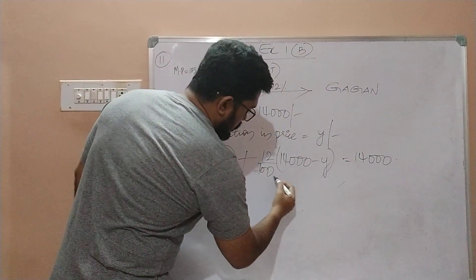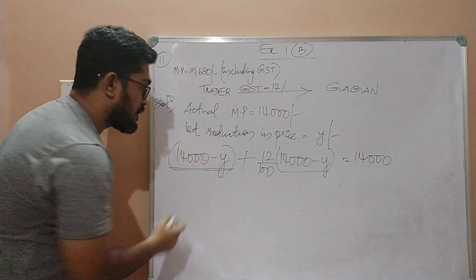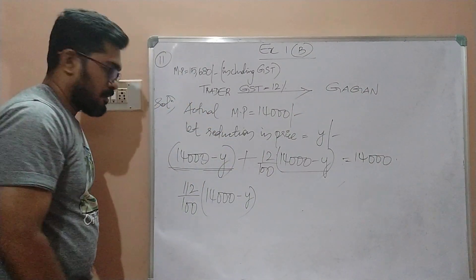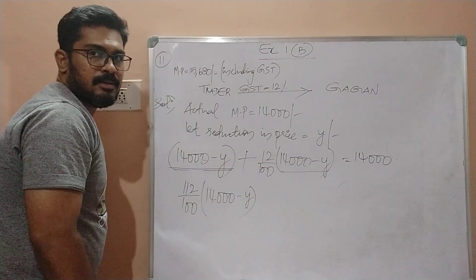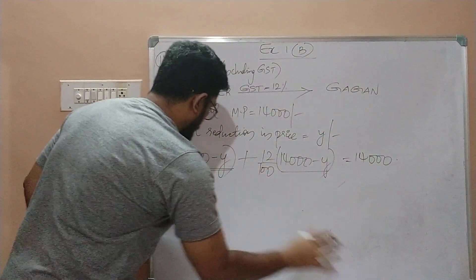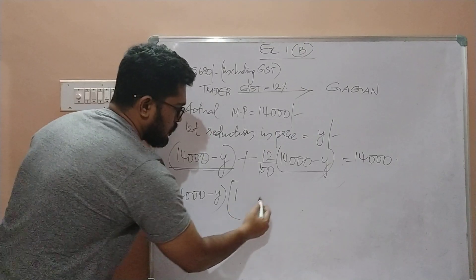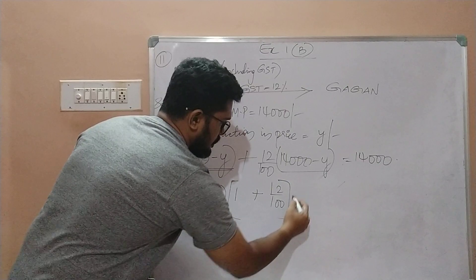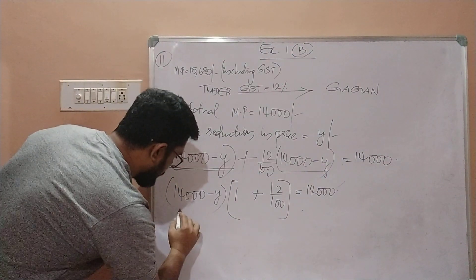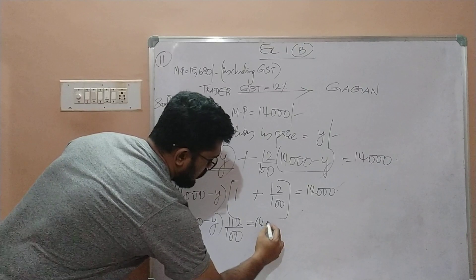Simplifying: (14,000 minus Y) plus 12% of (14,000 minus Y). Taking (14,000 minus Y) as a common factor, I get (14,000 minus Y) times (1 plus 12/100), which equals (14,000 minus Y) times 112/100. This equals 14,000. So the equation becomes: 112/100 of (14,000 minus Y) equals 14,000.